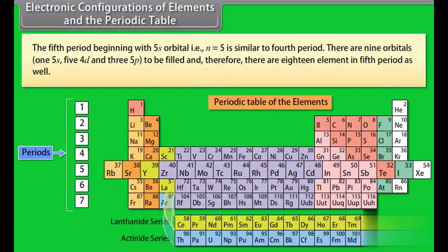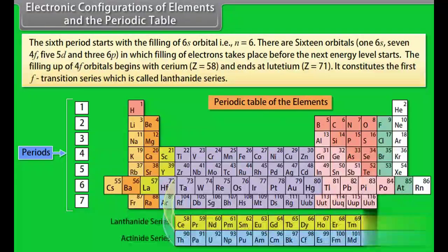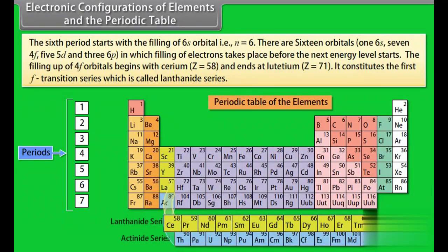The fifth period begins with the 5s orbital, n = 5, and is similar to the fourth period. There are 9 orbitals — 1 (5s), 5 (4d), and 3 (5p) — to be filled, giving 18 elements in the fifth period as well. The sixth period starts with the filling of 6s orbital, n = 6. There are 16 orbitals — 1 (6s), 7 (4f), 5 (5d), and 3 (6p). The filling of 4f orbitals begins with cerium (Z=58) and ends at lutetium (Z=71).